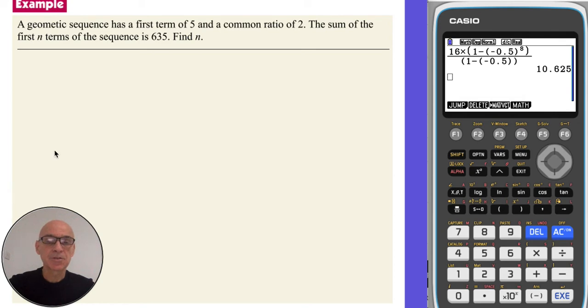In this question, we're told that the sum of the geometric sequence is 635. We have to work backwards to find out how many terms there were. So again, if we start by stating what we know, the first term u1 will be 5, and the common ratio r will be 2. And Sn, the sum of the first n terms, will be 635.